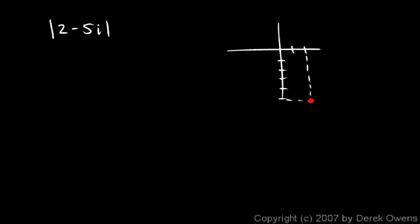We want the absolute value of that number. That will be this distance, the length of that segment. And we just use the Pythagorean theorem. It's going to be the square root of 2 squared plus negative 5 squared. And that's the square root of 4 plus 25, which is the square root of 29.